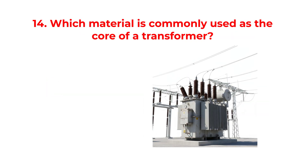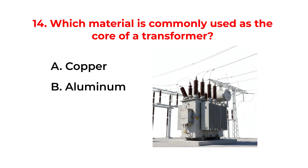Which material is commonly used as the core of a transformer? A. Copper. B. Aluminum. C. Soft iron. D. Steel.